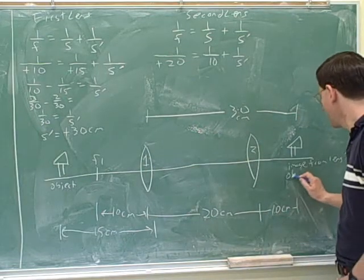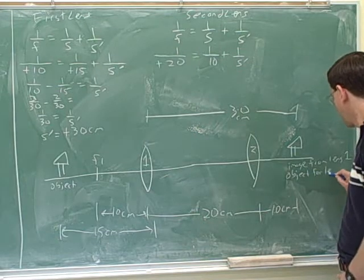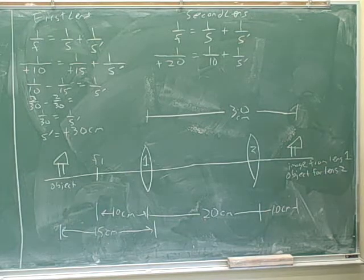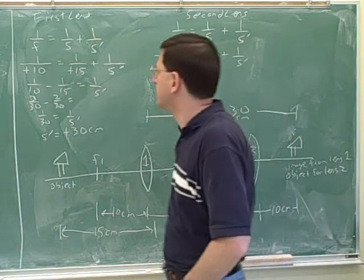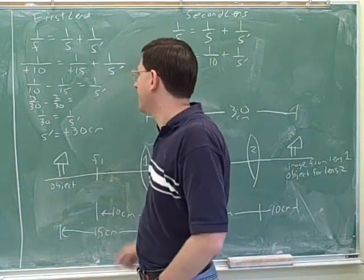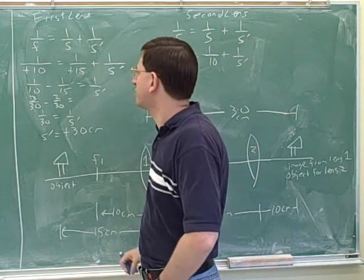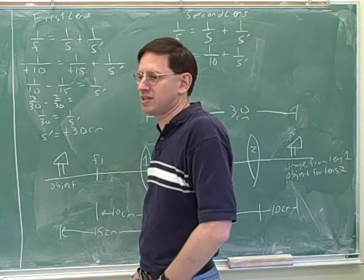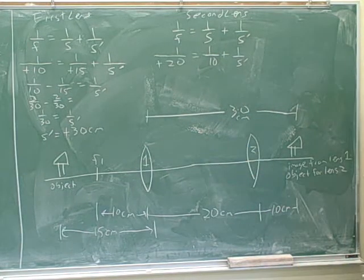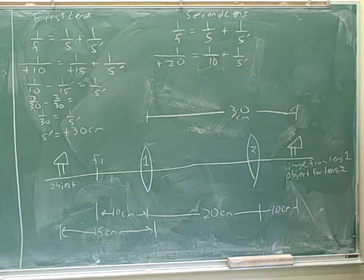We're going to treat this image as the object for lens two — that's just how multiple lens systems work. Now there's a complication. I've been harping about how important it is to always put in the sign for the focal length and the image distance, but I didn't worry about the sign on the object distance. For a simple problem, the object distance is always positive, but for multiple lenses, the object distance could be positive or negative. Can you take a guess which it will be here?